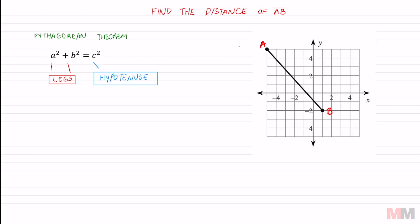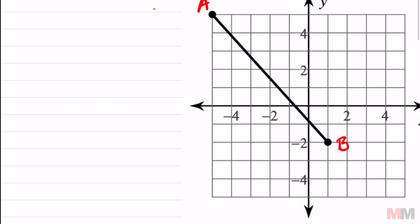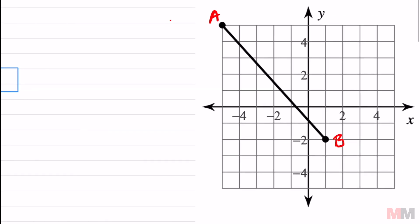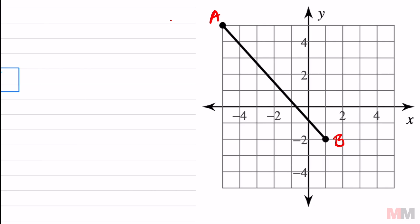In order to use this theorem, we need a right triangle and right now we don't have one. All we got is this line right here. However, if you wanted, you can draw your own right triangle using those two points.